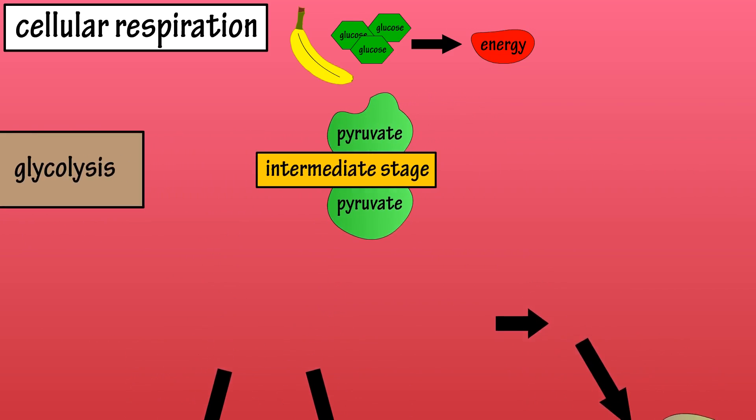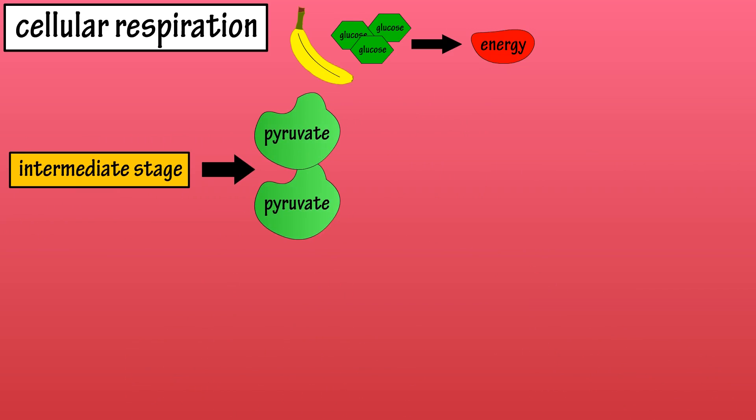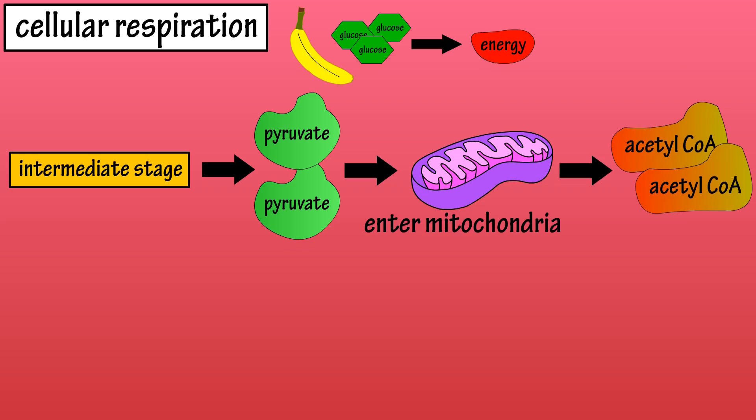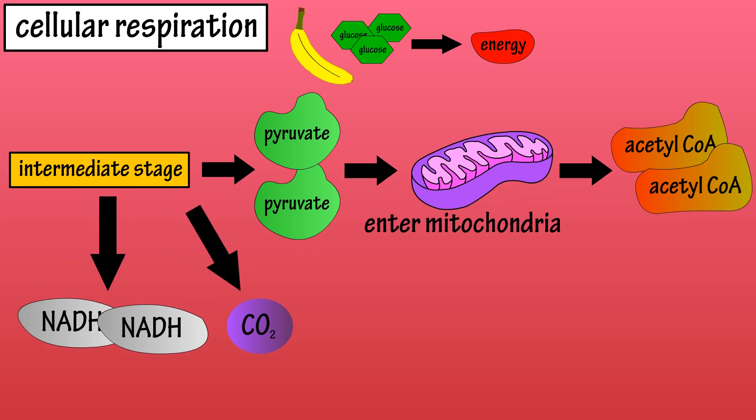Next is the intermediate stage. With oxygen available, the pyruvates will enter a mitochondria, which is an organelle in the cell. Here, pyruvate is converted into acetyl-CoA, two more molecules of NADH are produced, and a carbon dioxide CO2 molecule is released.